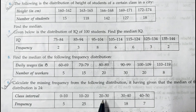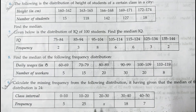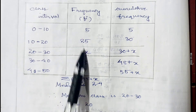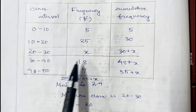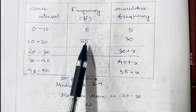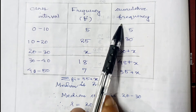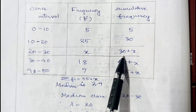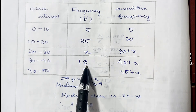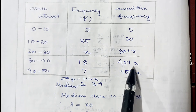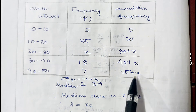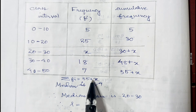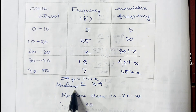In question number 9 we have to find the missing frequency. The median of the given distribution is 24, and we need to find the unknown frequency x. Cumulative frequencies are: 5, 30, 30+x, 48+x, and 55+x. Since summation fi is 55+x and the exact value is unknown, we use the fact that the median is 24.